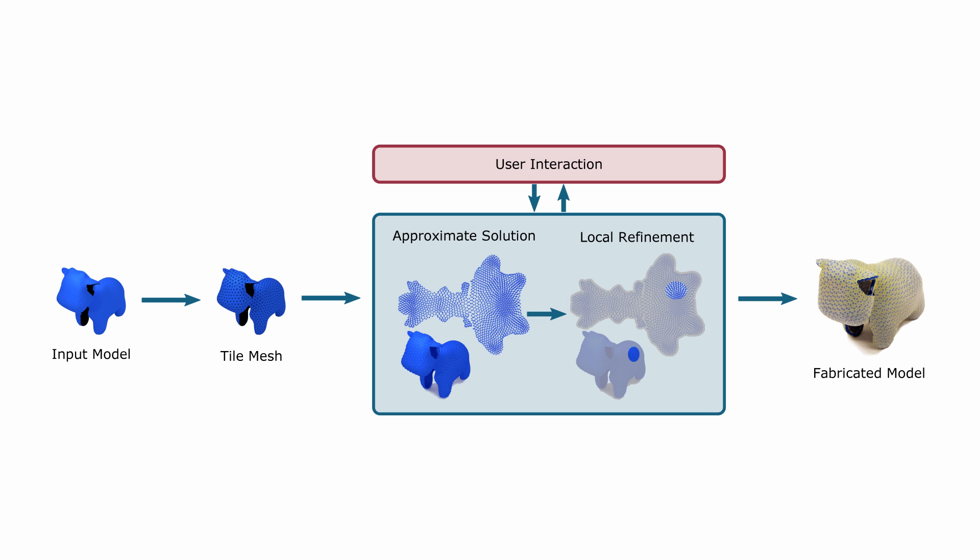The design process starts with the target model provided by the user. We pre-process the user input to obtain a regular triangle mesh with each triangle representing a tile. Then, we apply our two-step optimization procedure, keeping the user in the design loop.